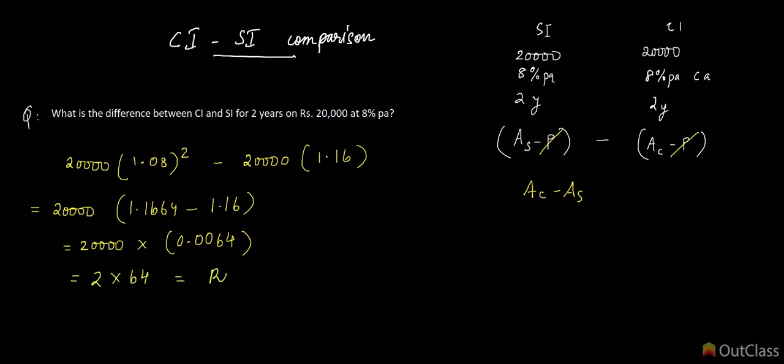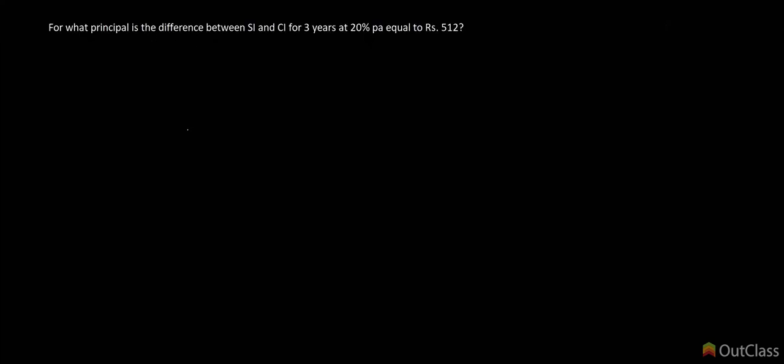Let's look at one more example: For what principal is the difference between SI and CI for three years at 20% per annum equal to Rs. 512? You have two different schemes: one is 20% per annum